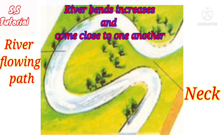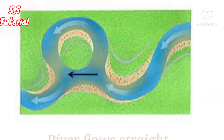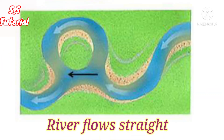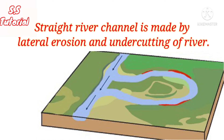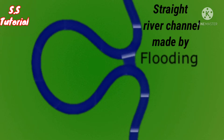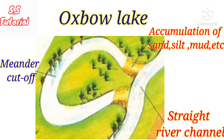As a result of long-term erosion and deposition, two river bends increase and get closer to one another. After that the river cuts its neck, which is actually a small piece of land between two bends, and the river flows straight rather than turning, making a new channel. This new straight river channel is generally made by two ways: either by lateral erosion and undercutting of the river, or by flooding.